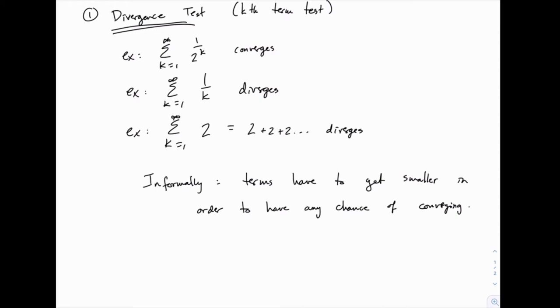Notice that just because the terms are getting smaller, isn't enough to confirm that it converges, but if they're not getting smaller, we know for sure that it can't converge. So it's a necessary condition, but it's not a sufficient condition. Just knowing that the terms are getting smaller doesn't actually tell us that it converges, but if it doesn't pass this test, we know for sure that it diverges.